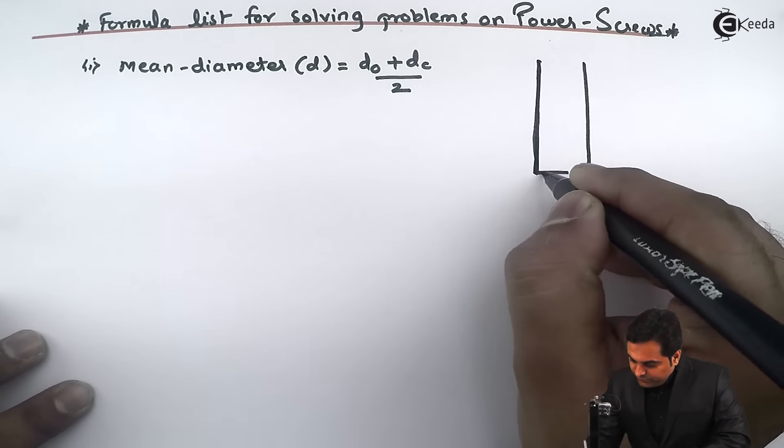Here, alpha is called the helix angle. Pi D is the distance moved by the screw thread in one rotation. P is the pitch.